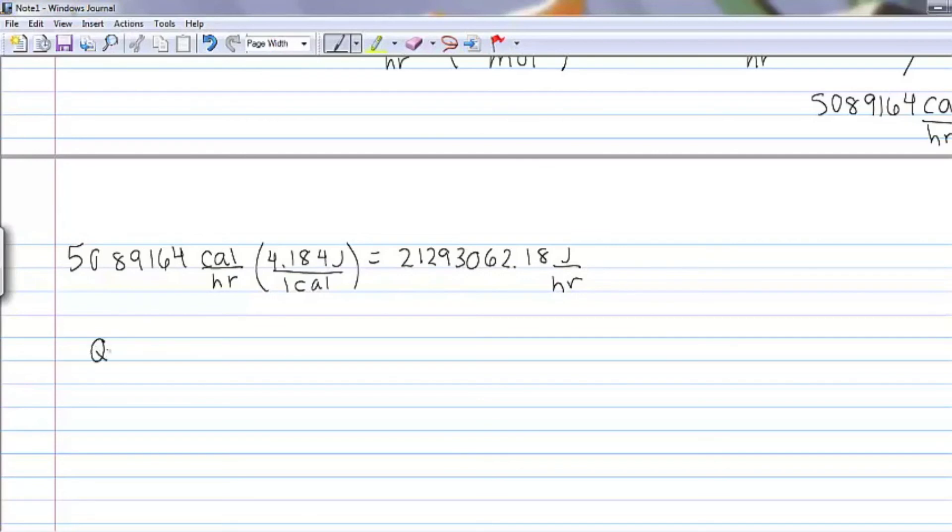From chemistry, we know that Q, the heat, is equal to mass times heat capacity times change in temperature. For water, Cp is equal to 4.184 joules per kilogram per kelvin, and in this problem, the temperature change is 15 degrees kelvin. We also know that mass is equal to volume times density. We will assume a constant density of water of 1,000 kilograms per meter cubed.